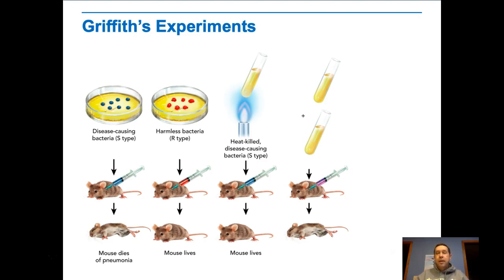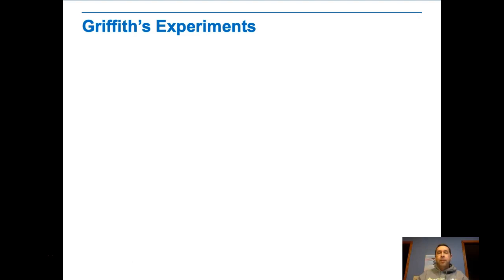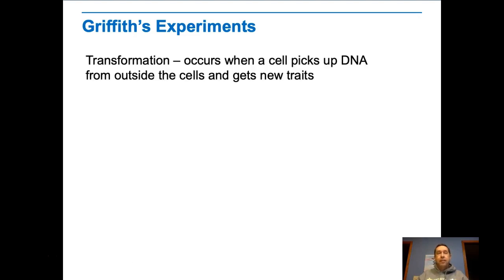But then when he took the mixture of the dead disease-causing bacteria and the live harmless bacteria and injected those into the mouse, the mouse dies of pneumonia, and we find that there were live S strain bacteria. So something was changing or transforming the harmless bacteria into harmful bacteria — we call that a transforming principle. He didn't know what it was, he just knew that it was going on. Transformation occurs when a cell picks up DNA from outside the cell and gets new traits.